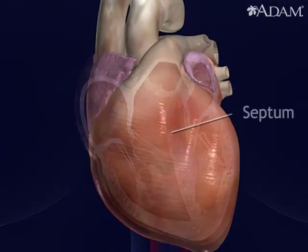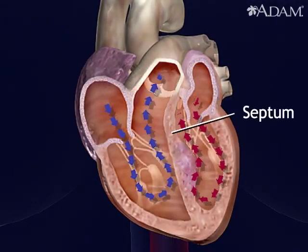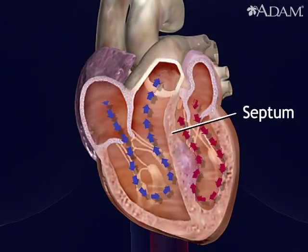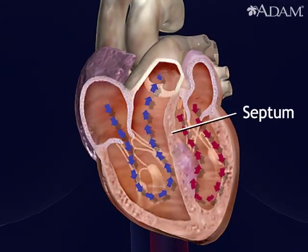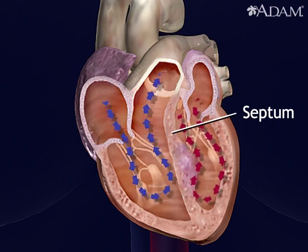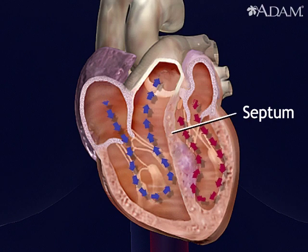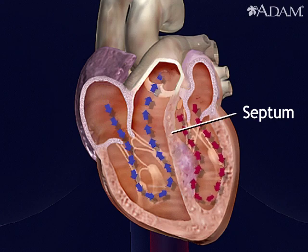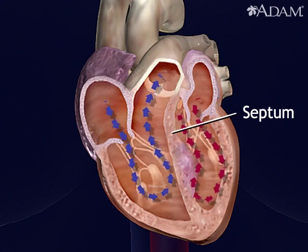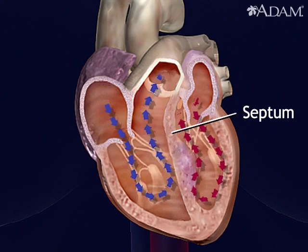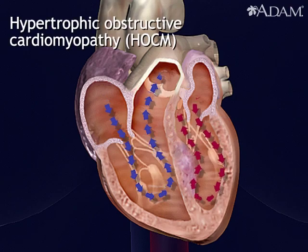Cardiomyopathy refers to heart muscle disease. Here, a diseased section of wall that separates the heart chambers that pump blood out partly blocks the flow through one of them. The condition is called hypertrophic obstructive cardiomyopathy.